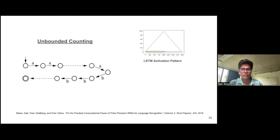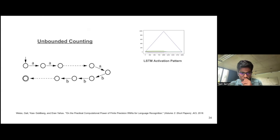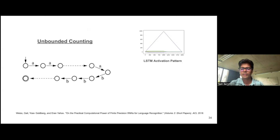Another interesting problem studied in formal languages is unbounded counting. An example is the language A^N B^N, where we want to match the number of A's and the number of B's occurring in sequence. Intuitively, we start counting up A's and then count down as we see B's. A 2018 paper by Gail Weiss showed that LSTMs can solve this, and the activation pattern matches our intuition — it goes up as we encounter A's and starts going down as we encounter B's.